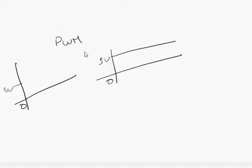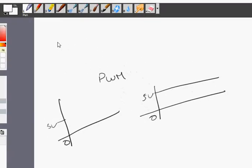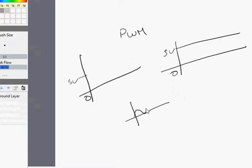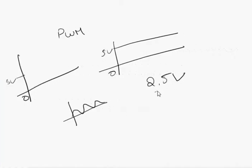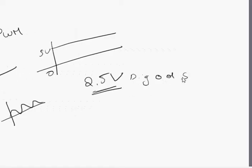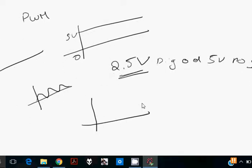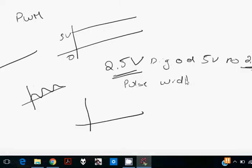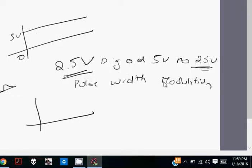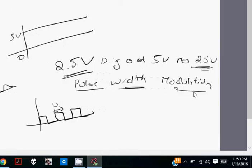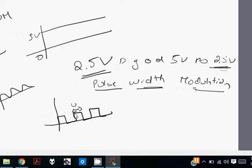We have our five volts and our zero, and we need to get an intermediate value between five and zero — an analog signal. Say we need an analog signal of 2.5 volts. Digital pins output either zero or five, so no 2.5 directly. Let's go by the definition: Pulse Width Modulation. A pulse is a digital wave. The width of a pulse is this distance, and modulation means adjustment.